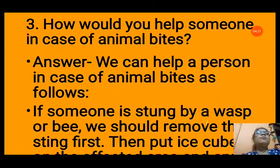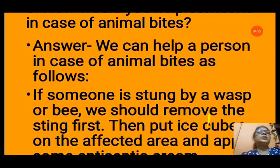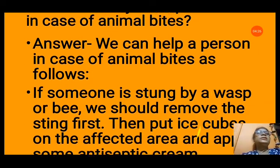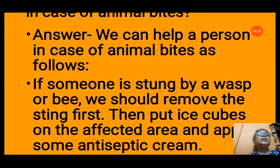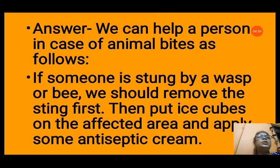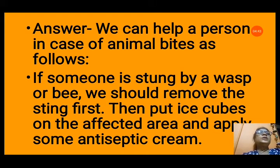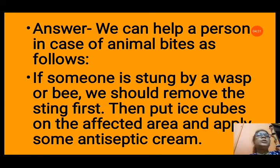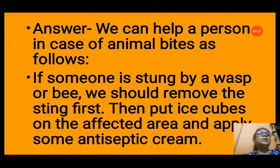Question number 3: How would you help someone in case of animal bites? Different types of insects and animals can bite us. If someone is stung by a wasp or bee, we should remove the sting first, then put ice cubes on the affected area and apply some antiseptic cream. If antiseptic cream is not available, we can use a baking soda and water paste.